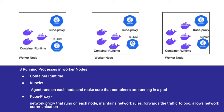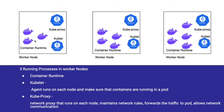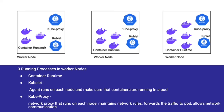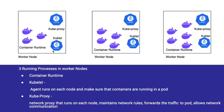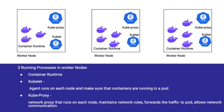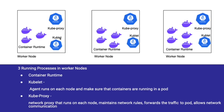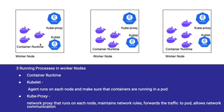Now let's look at the worker node processes: container runtime, kubelet, and kube-proxy. The worker node actually runs applications and containers, so it needs more resources — more CPU and more memory. The worker node must have a container runtime such as Docker or any other container technology. The second process is kubelet, which is required to actually run those containers. Kubelet helps in running the containers within the pod. While the scheduler within the master node decides which node to use, kubelet actually runs those containers within the worker node.